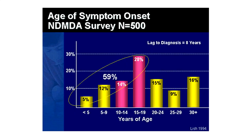An important highlight: age of symptom onset can be in adolescence. There's a significant number of people with symptoms occurring in the 10 to 19-year range, even down to 5 to 19. If we can get these individuals into treatment early, we may be able to help them lead much more productive lives. The lag to diagnosis tends to be around 8 years after these symptoms first appear.